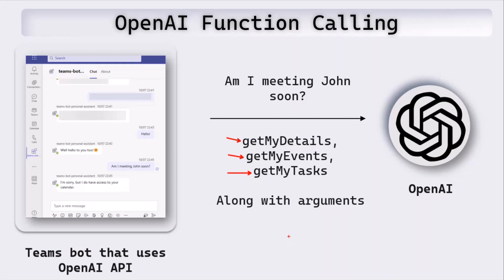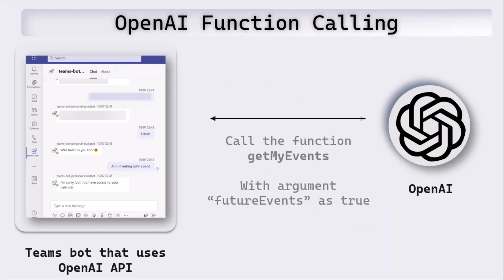There can be more functions as well, but we'll send these functions and also tell OpenAI what arguments these functions expect. OpenAI gets this information and based on the question 'Am I meeting John soon?', it tells us we need to call the get my events function from our code, and it also tells us there's an argument called future events which has to be set to true. If the question was something different like 'When are my next tasks coming up?', OpenAI would have told us to call the get my tasks function, not get my events.